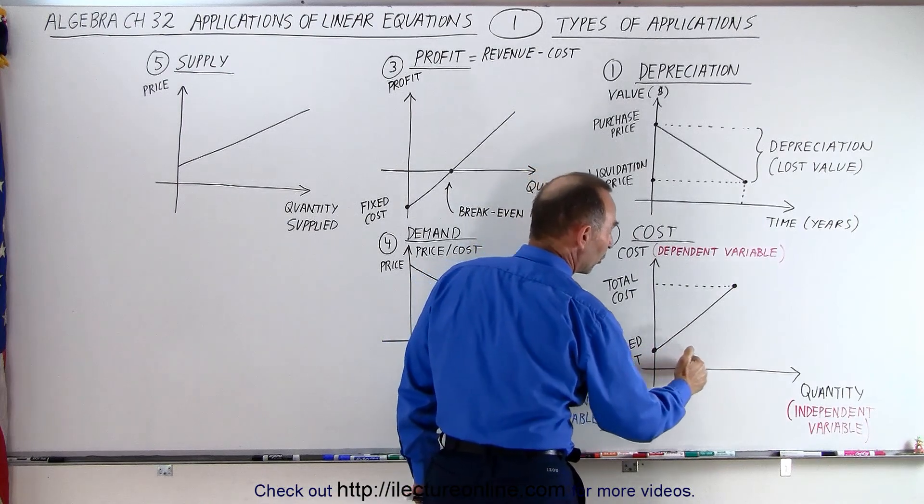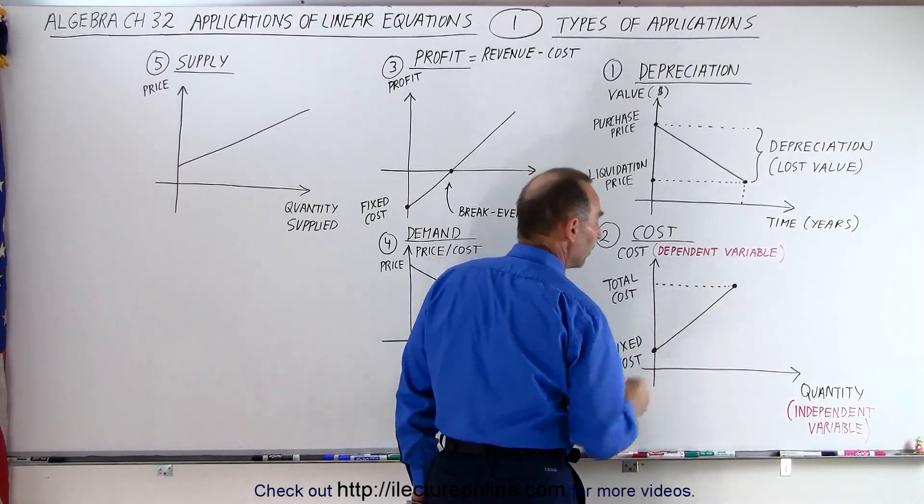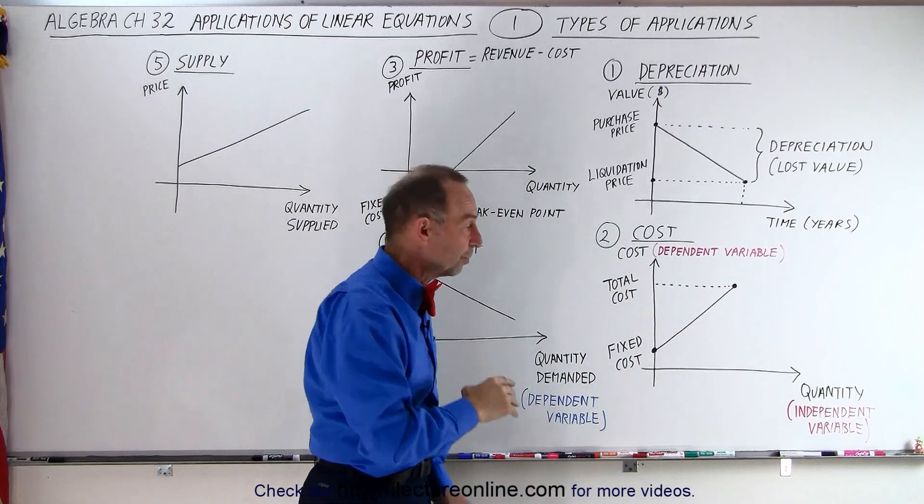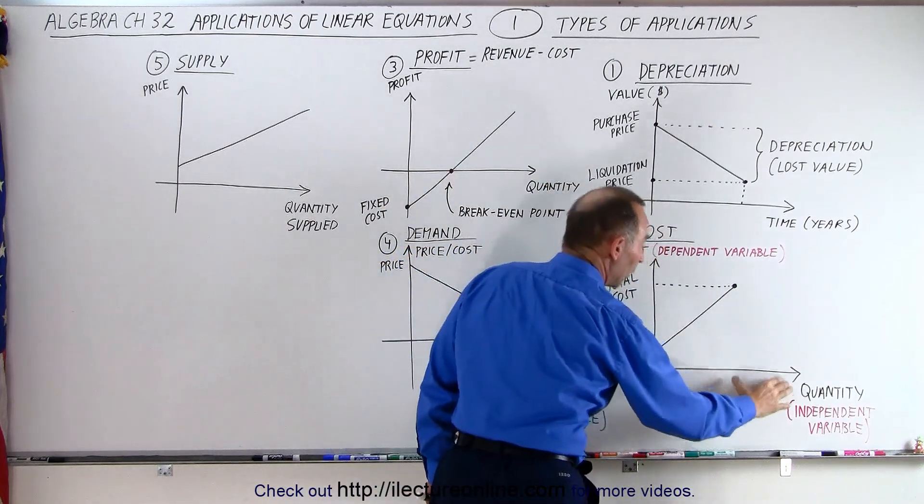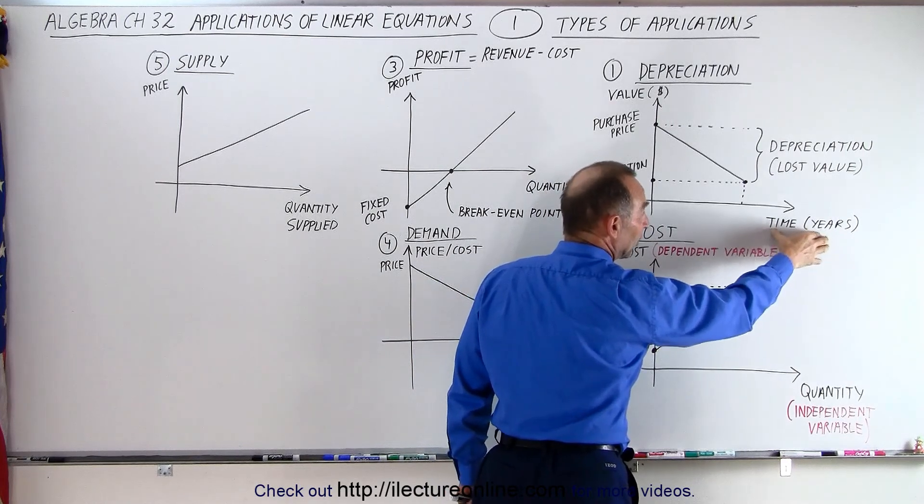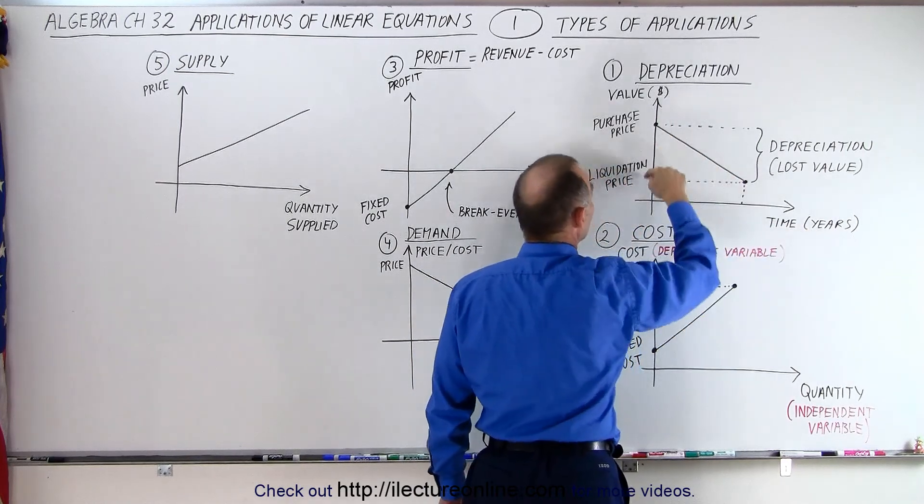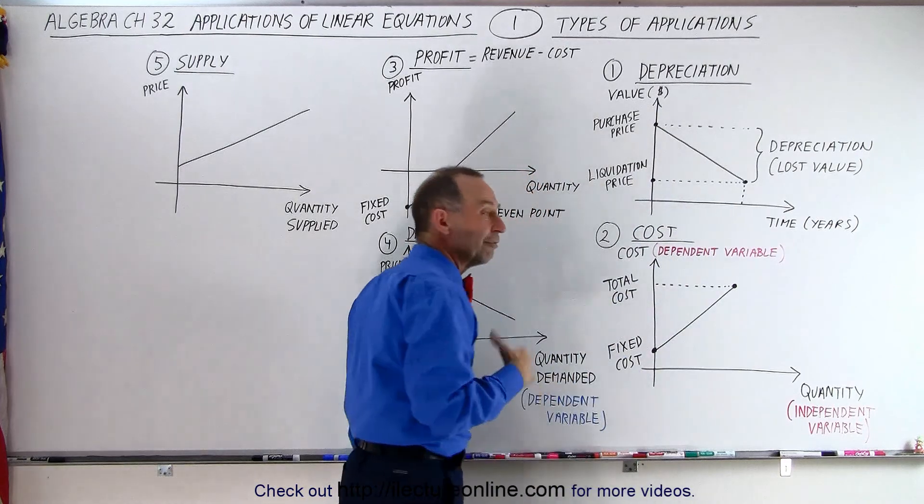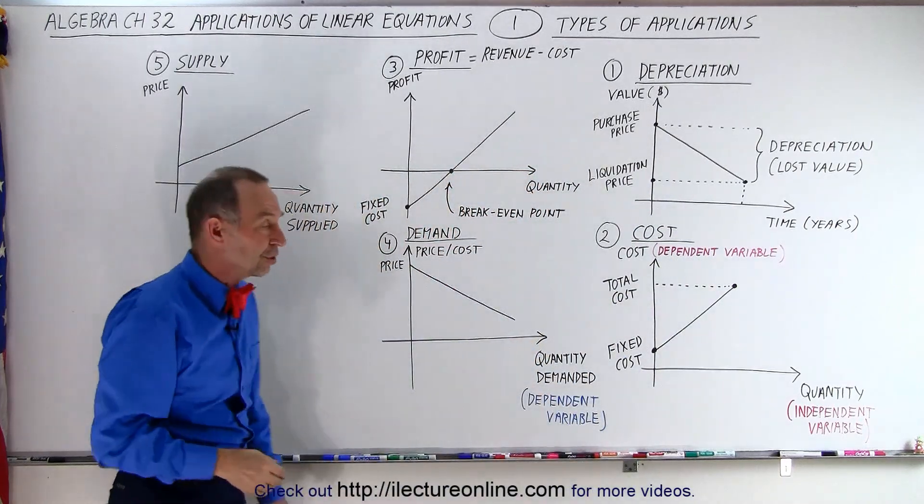Now notice the quantity of hamburgers sold is the independent variable. The dependent variable is the cost to produce those hamburgers. And so you can see that as you produce more hamburgers, the cost goes up. That's the relationship between what goes into the equation and what comes out of the equation. Same over here, this would be the independent variable, how much time has elapsed, and this would be the dependent variable, the value of the object that you're dealing with.